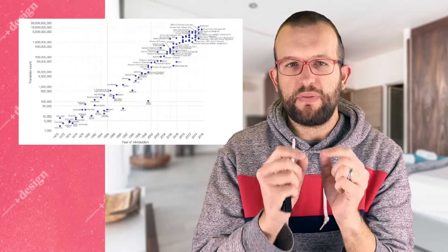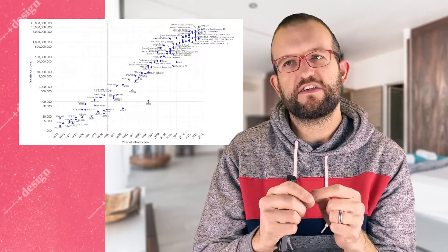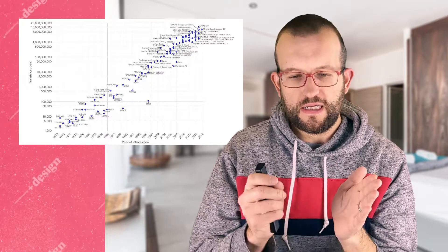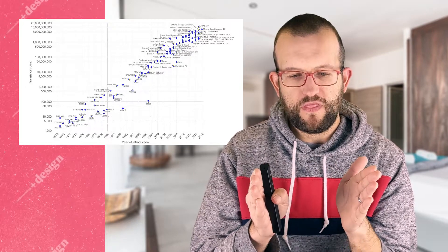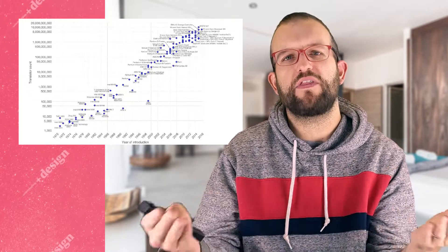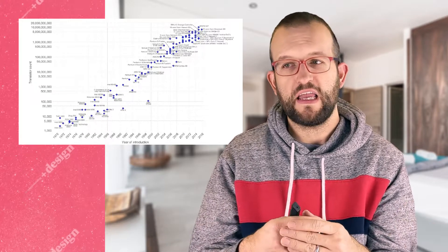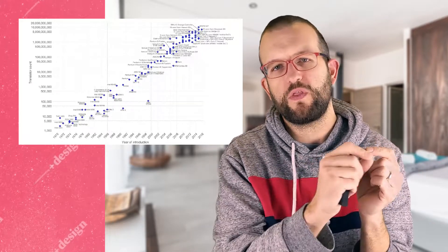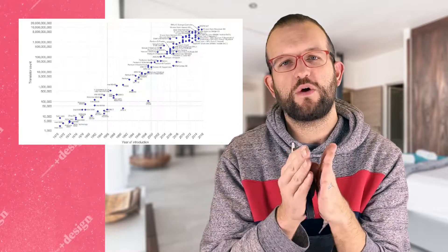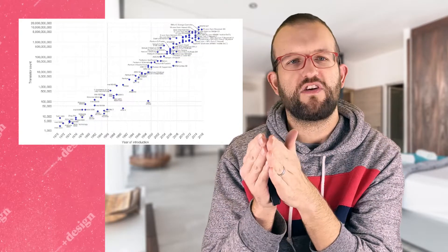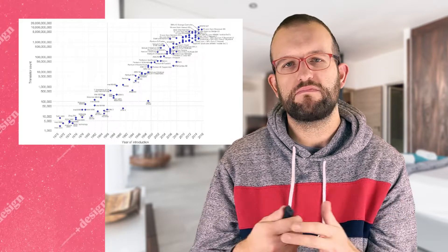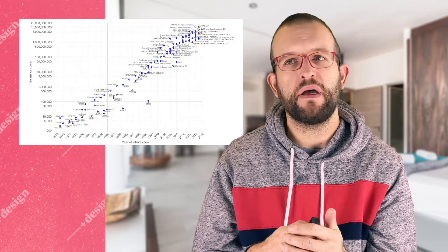But these 23 billion transistors are quickly getting to the point where they are so small that they behave outside the qualities of the universe. We can't prevent electricity from flowing through them the way we're used to, because they're so tiny that electrons just pass through the gate without obeying the laws of physics as we understand them.